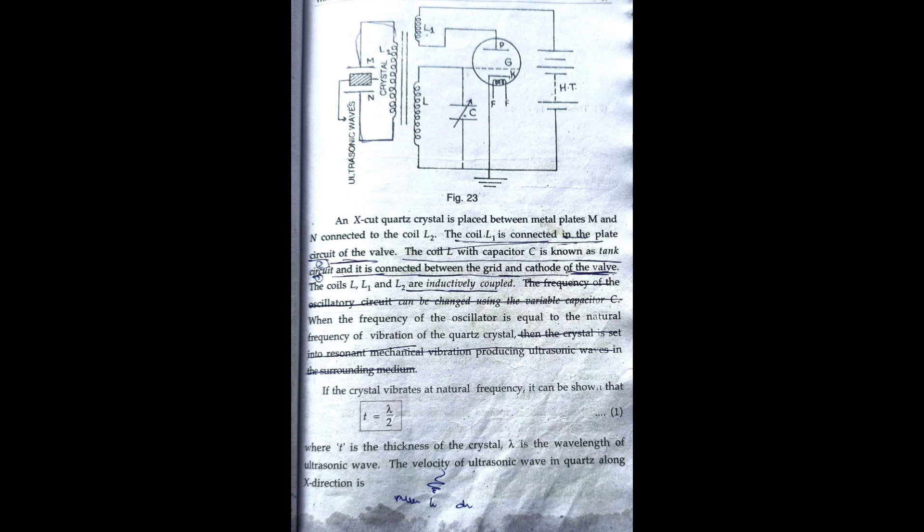The coil L is connected in the plate circuit of the valve. The coil T with capacitor C is known as tank circuit and it is connected between the grid and cathode of the valve.